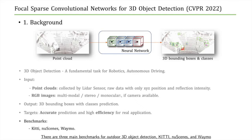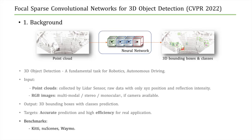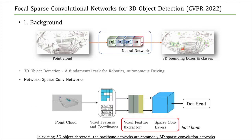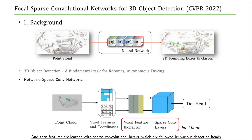There are three main benchmarks for outdoor 3D object detection: KITTI, nuScenes, and Waymo. In existing 3D object detectors, the backbone networks are commonly 3D sparse convolution networks. Point clouds are first processed into voxels, and then features are learned with sparse convolutional layers, which are followed by various detection heads.